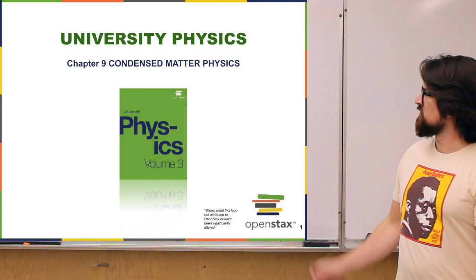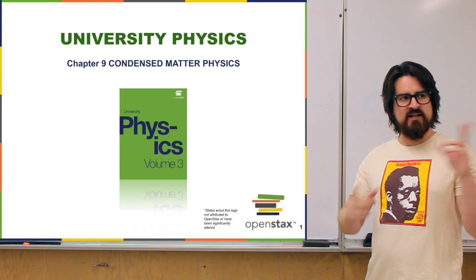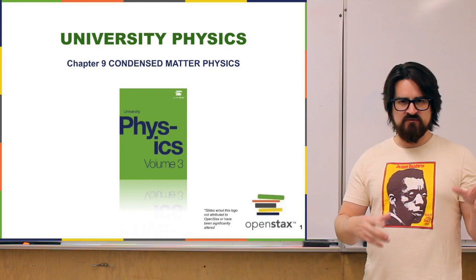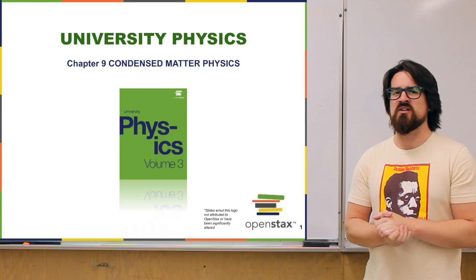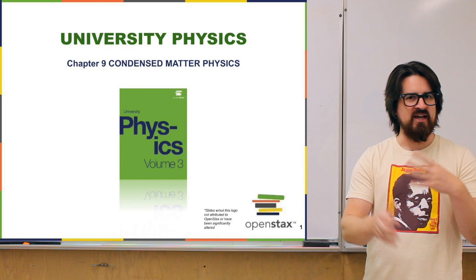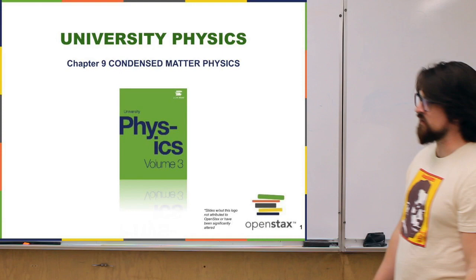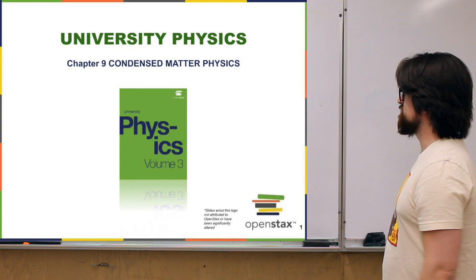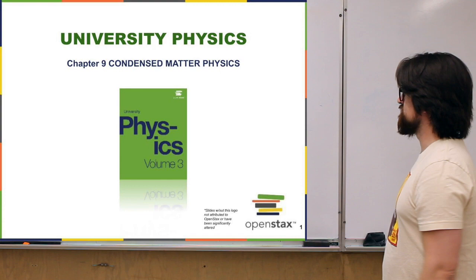Welcome to some more lectures about physics. This is on chapter nine about condensed matter physics. As mentioned in the last chapter's lectures, the mathematics involved in all this physics is just beyond this course. So this chapter is going to be a lot of storytelling — painting the picture of how the mechanics of these different things work out. The condensed part generally refers to solids and liquids, having to do with chemical bonds. These are just some examples of what would be considered condensed matter.